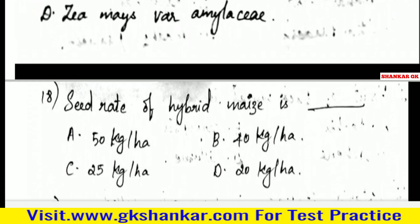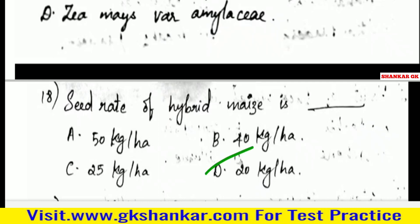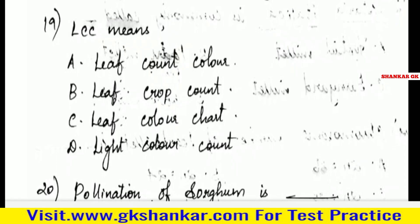Eighteenth question: Seed rate of hybrid maize is — A. 50 kg per hectare, B. 40 kg per hectare, C. 25 kg per hectare, D. 20 kg per hectare. Answer: D. 20 kg per hectare.